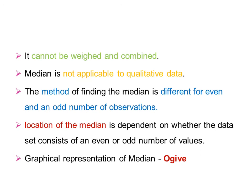Another characteristic: median cannot be weighted and combined. We have a weighted arithmetic mean and a combined arithmetic mean, but median is not applicable in the same way. Also, median is not applicable to qualitative data. The method of finding the median is different for even and odd numbers of observations.